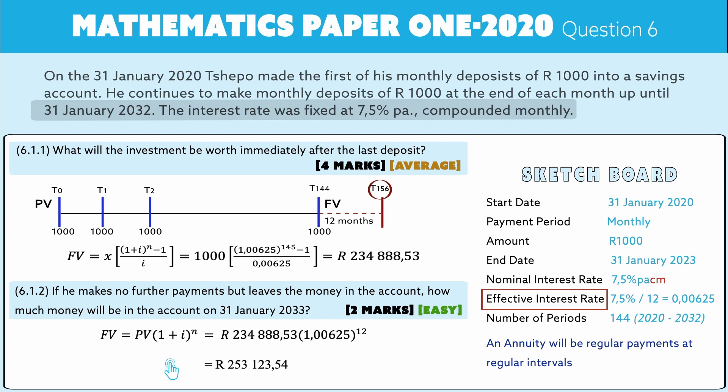He'll have 253,123 rand and 54 cents. He didn't add more or take anything away — he just left it for one more year — and you can see the significant amount of interest gained. Key reminders: you can only work with effective interest rates per period; n is the number of payments inside the annuity; i is the decimal equivalent of the effective interest rate per period; regular payments at regular intervals form an annuity.